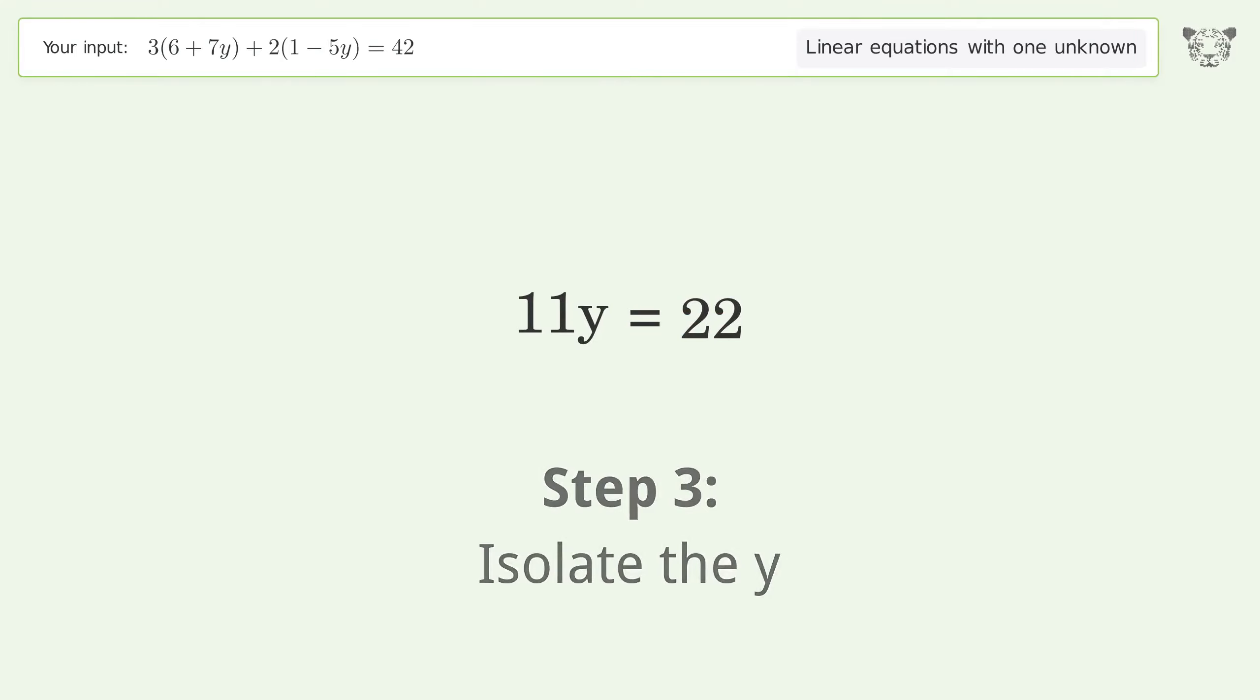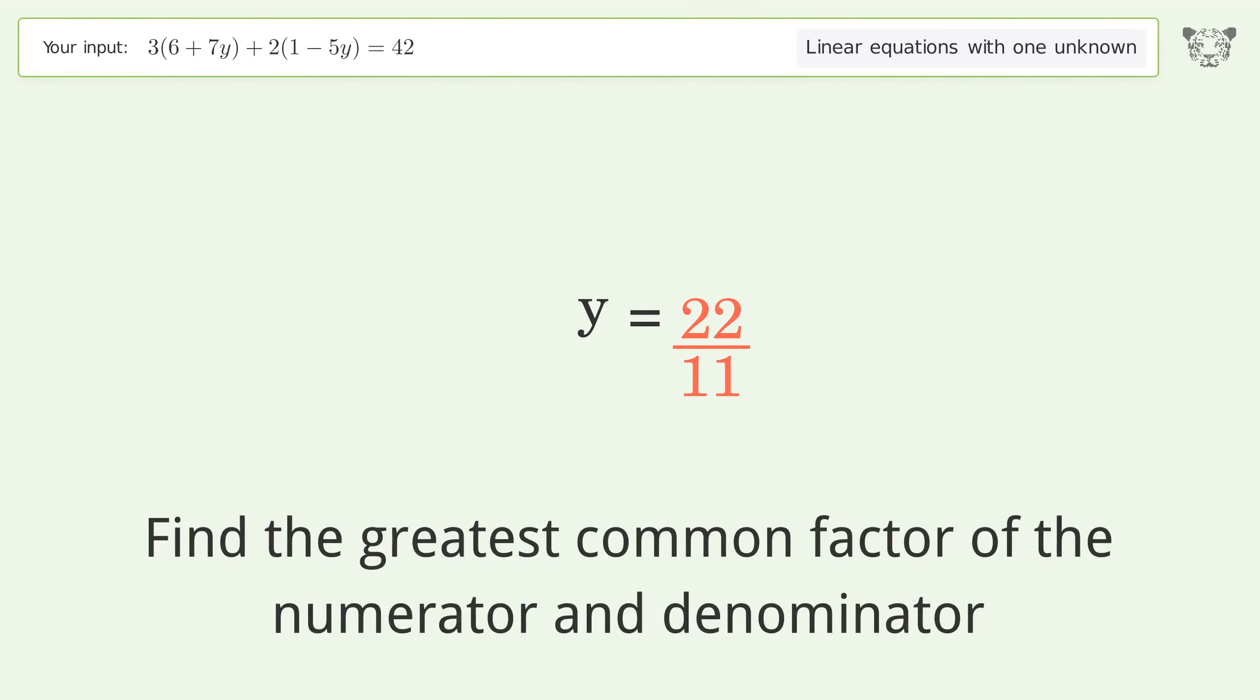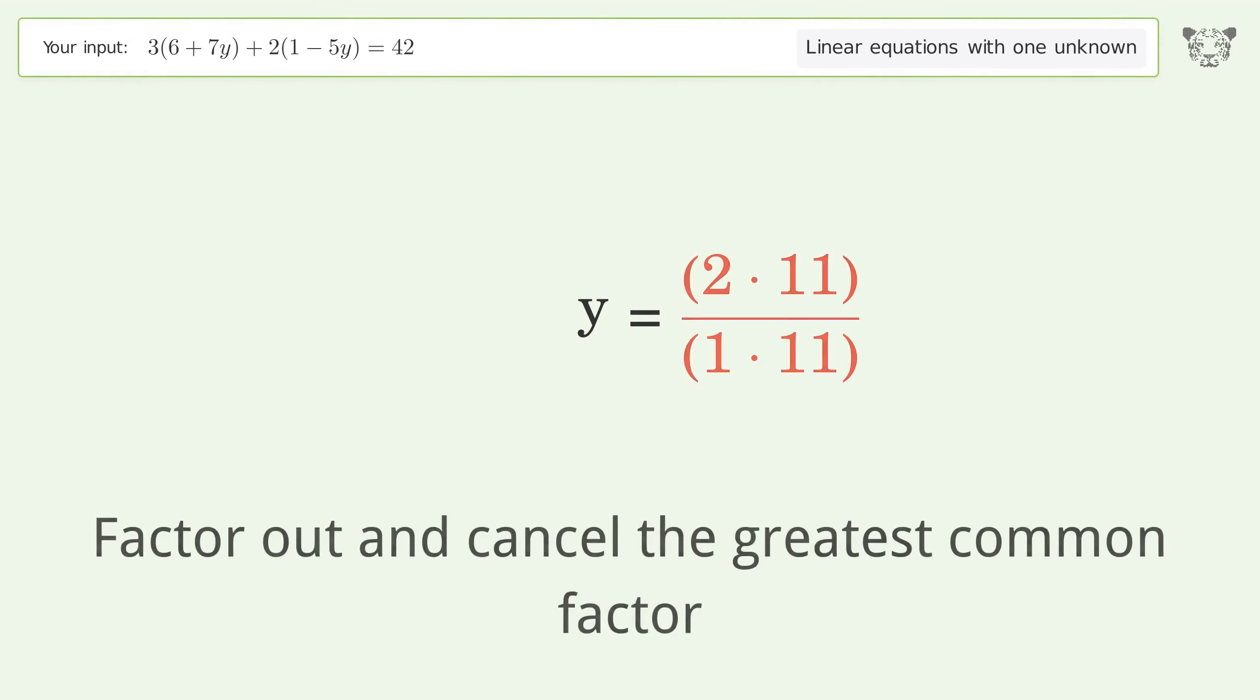Isolate the y by dividing both sides by 11. Simplify the fraction. Find the greatest common factor of the numerator and denominator, factor out and cancel the greatest common factor.